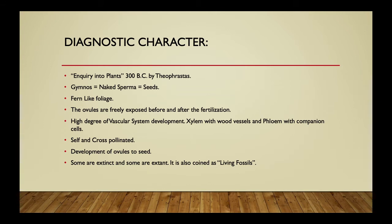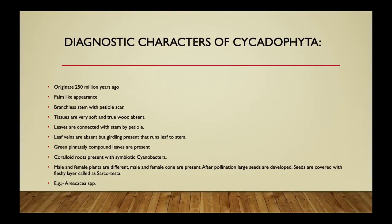Gymnosperms originated around 300 million years ago in the Devonian period, and their characteristics have not changed significantly since then. They are also noted as living fossils, as they originated long ago and have continued to exist with minimal change. Adaptations are very minimal for this kind of plant.